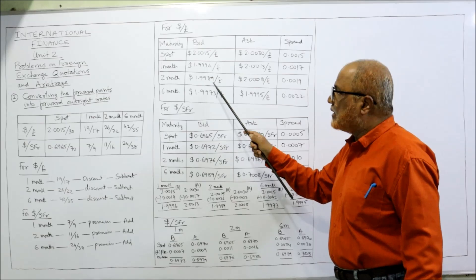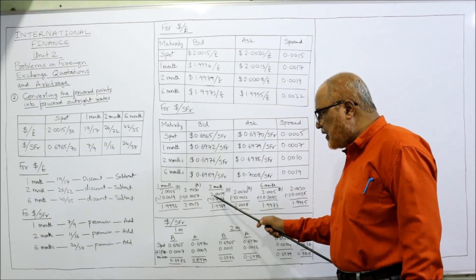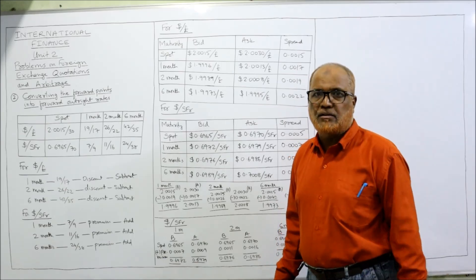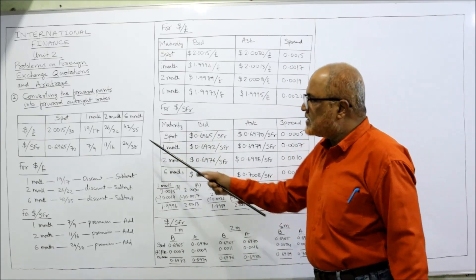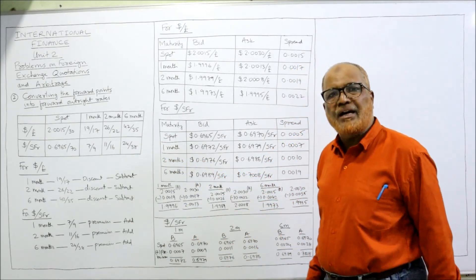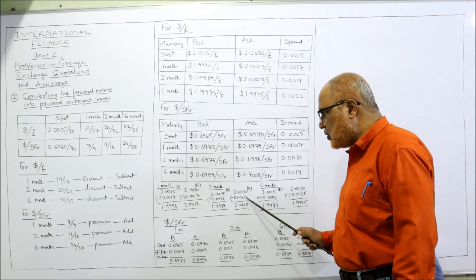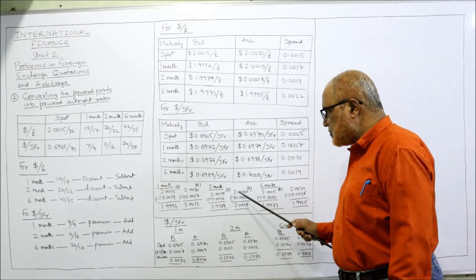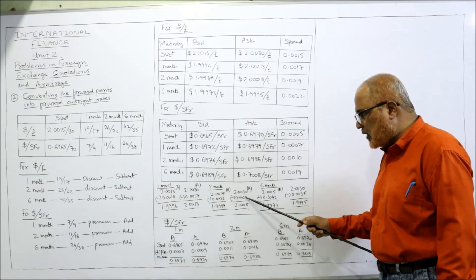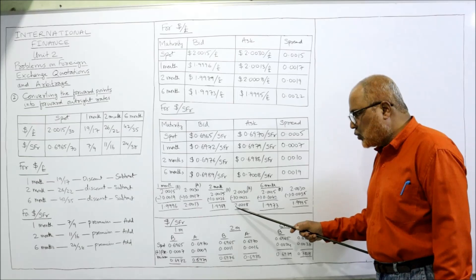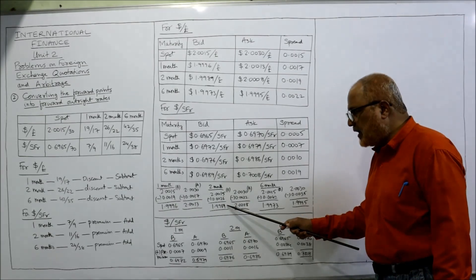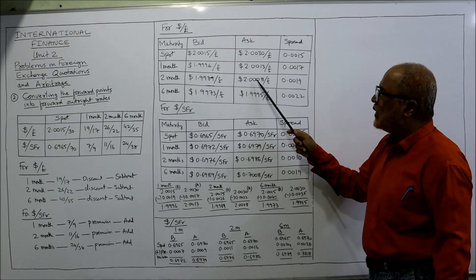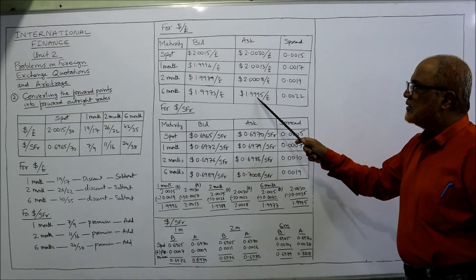For two months: the points are 26 and 22. So 2.0015 minus 0.0026 gives 1.9989, and 2.0030 minus 0.0022 gives 2.0008. So the two-month bid rate is 1.9989 and the ask rate is 2.0008.